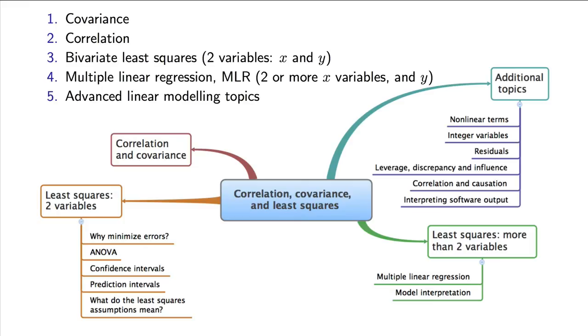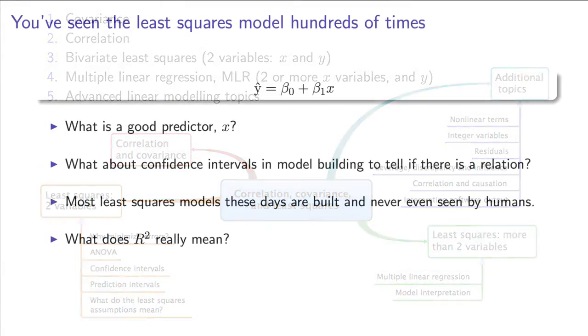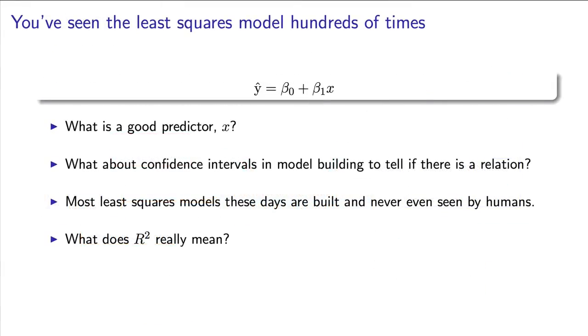Once we understand those two concepts, we will look at least squares models where there's just a single x variable used to predict your y variable. We will spend quite a bit of time on that to help you interpret the R-squared value correctly and to recognize that it should not be your only guide in judging a least squares model. We will also learn how to properly judge the predictions from these models.